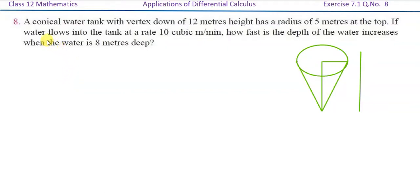Unit 7.1, question number 8: A conical water tank with vertex down of 12 meters height has a radius of 5 meters at the top. If water flows into the tank at a rate of 10 cubic meters per minute, how fast is the depth of the water increasing when the water is 8 meters deep?